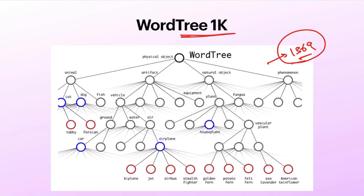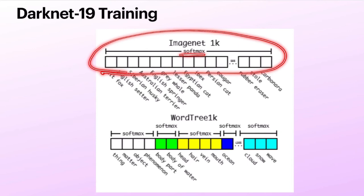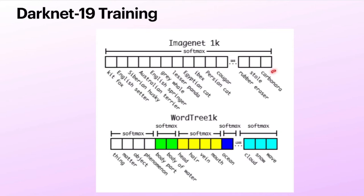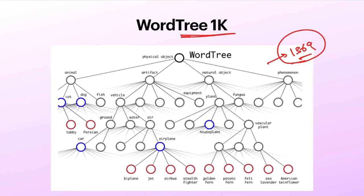There is one more change to the training. Usually we consider a single softmax layer — in ImageNet, all 1000 classes have a single softmax, so the total probability score sums to 1 and the class with the highest probability is the final prediction. But in this WordTree example, you have overlapping classes. If it is a biplane, that doesn't mean it is not an aeroplane — these two are overlapped. So we cannot use a single softmax function here. Instead, they have applied a softmax for every group.